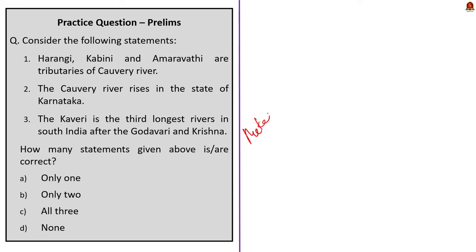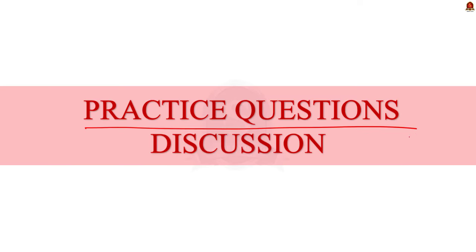To summarize: the Mekedatu project is planned across the Kaveri River — a multi-purpose project with several objectives. The Kaveri flows from Karnataka through Kerala, Tamil Nadu, and Puducherry, with its origin in the Brahmagiri ranges of the Western Ghats in Karnataka. With these points covered, let us move to the preliminary practice question discussion.